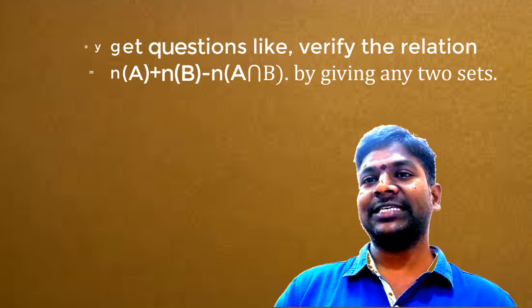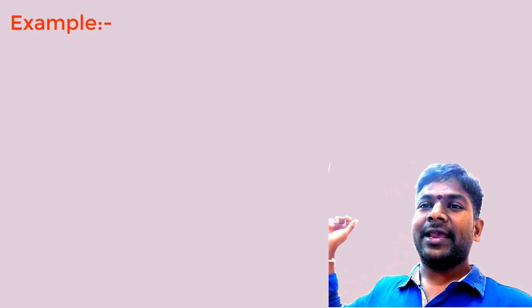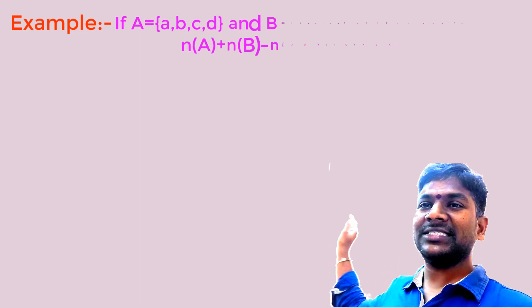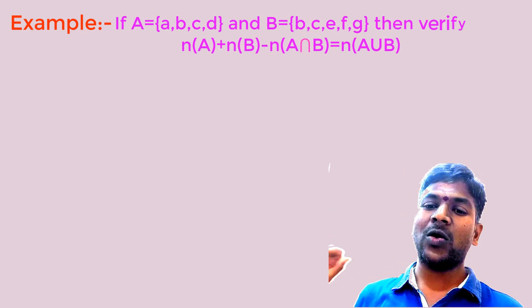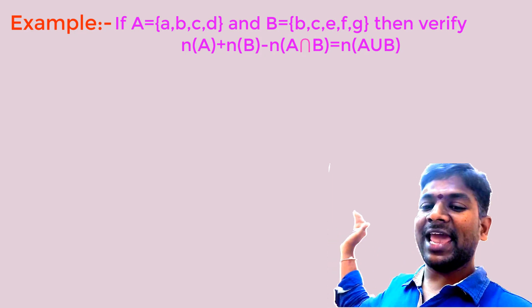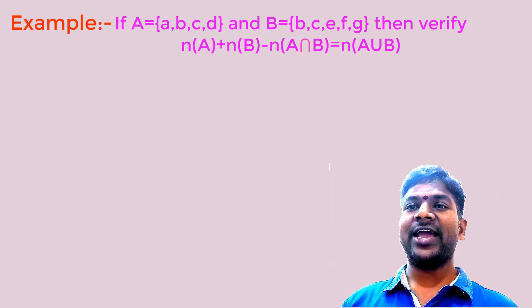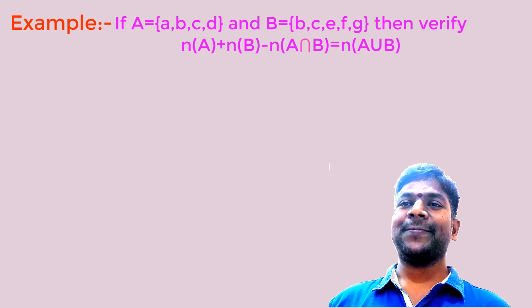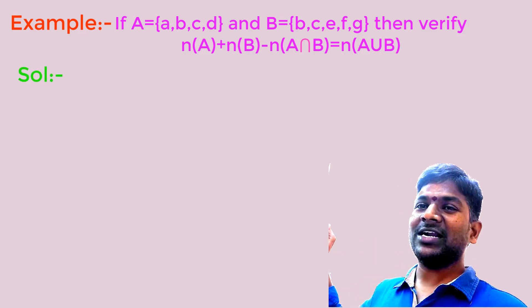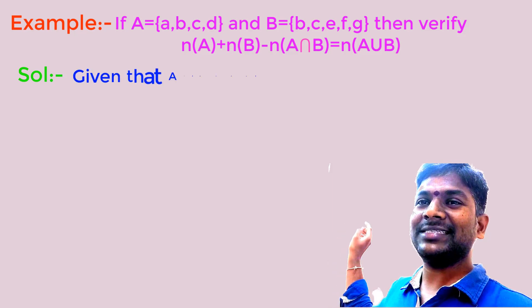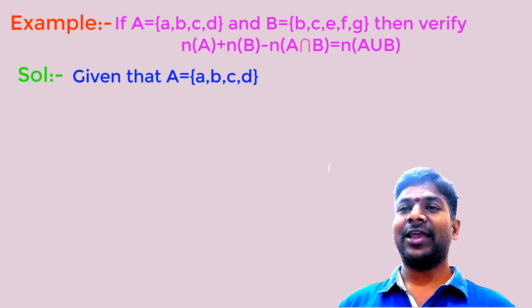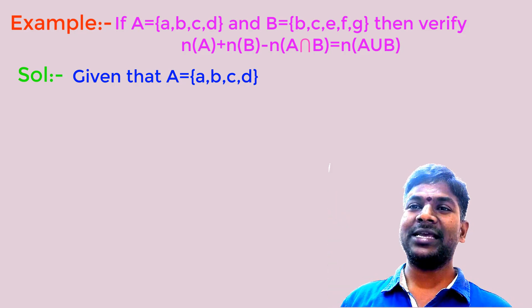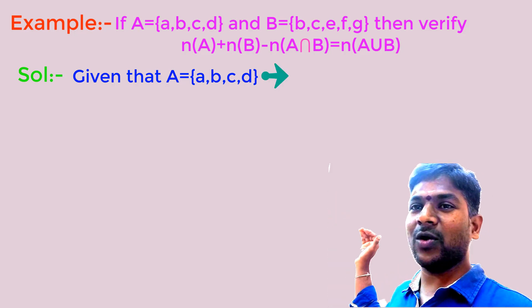Let us take a question which is asked in examinations to verify the relation. Set A = {A, B, C, D} and Set B = {B, C, E, F, G}. Verify: N(A) + N(B) − N(A∩B) = N(A∪B). First, consider set A = {A, B, C, D}. How many elements are in set A? 4 elements. So N(A) = 4.